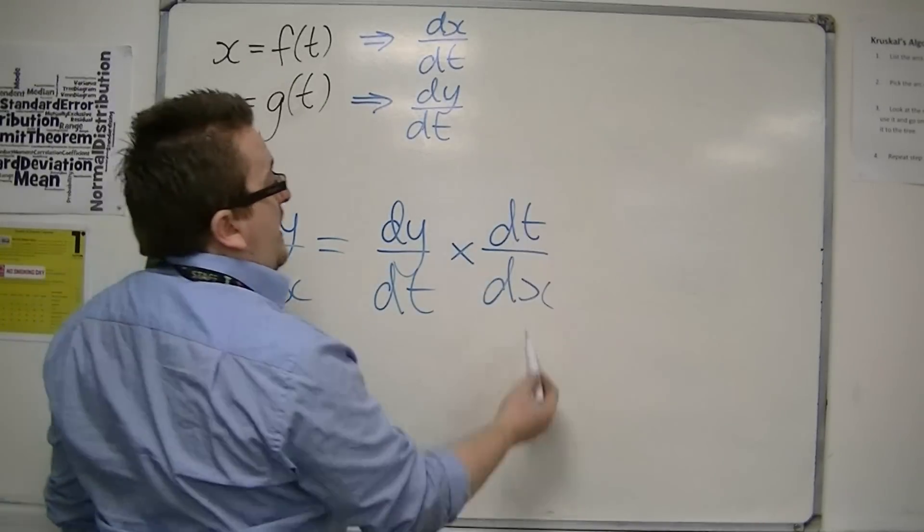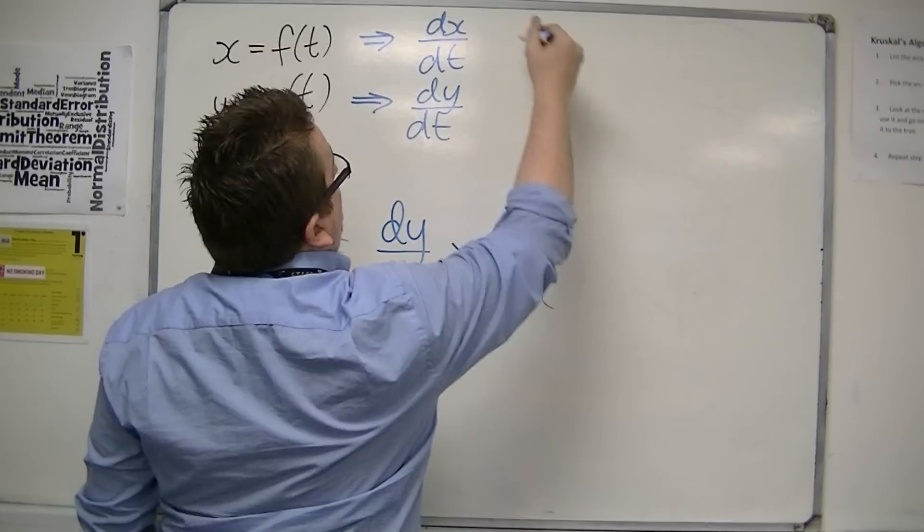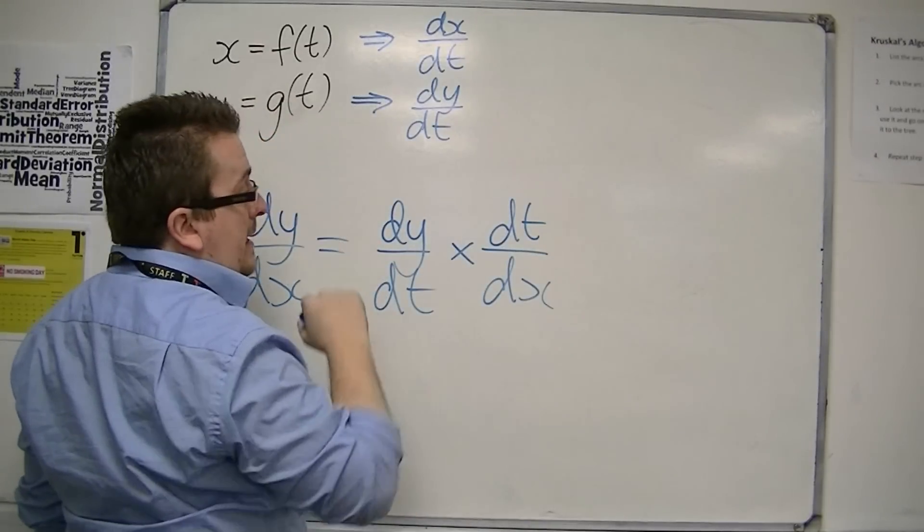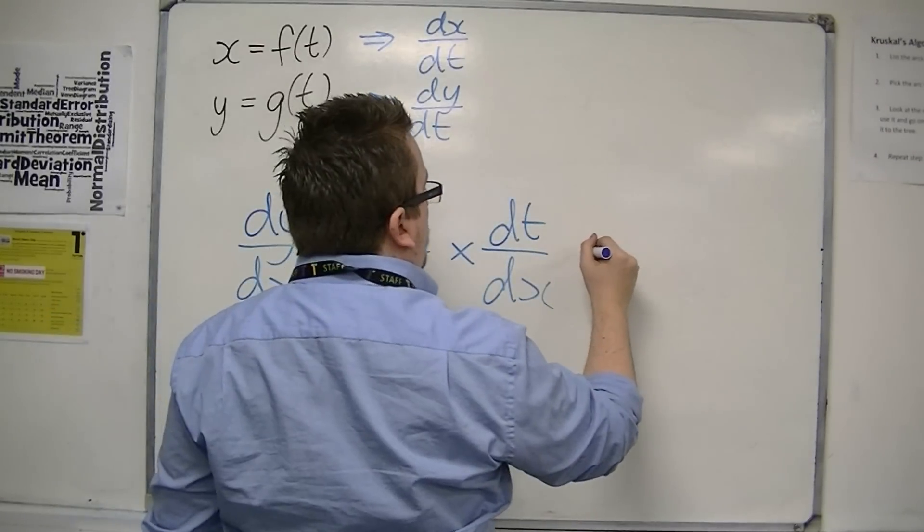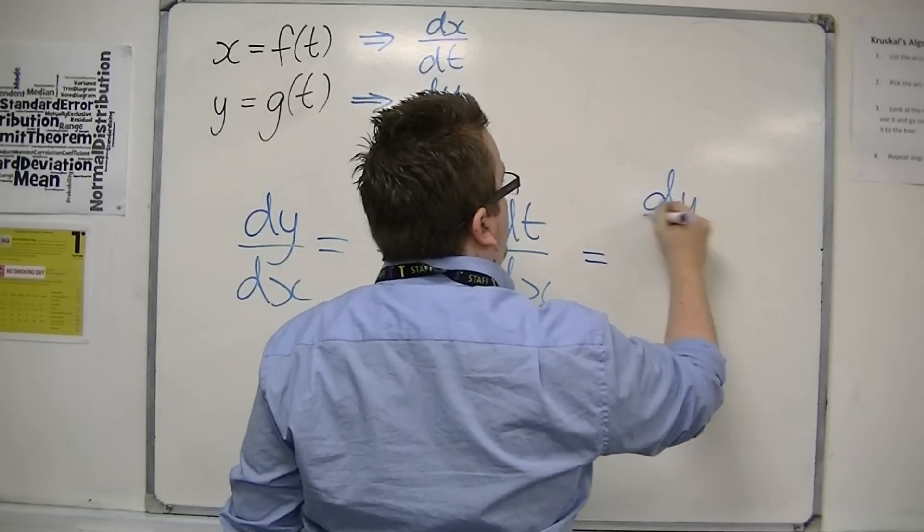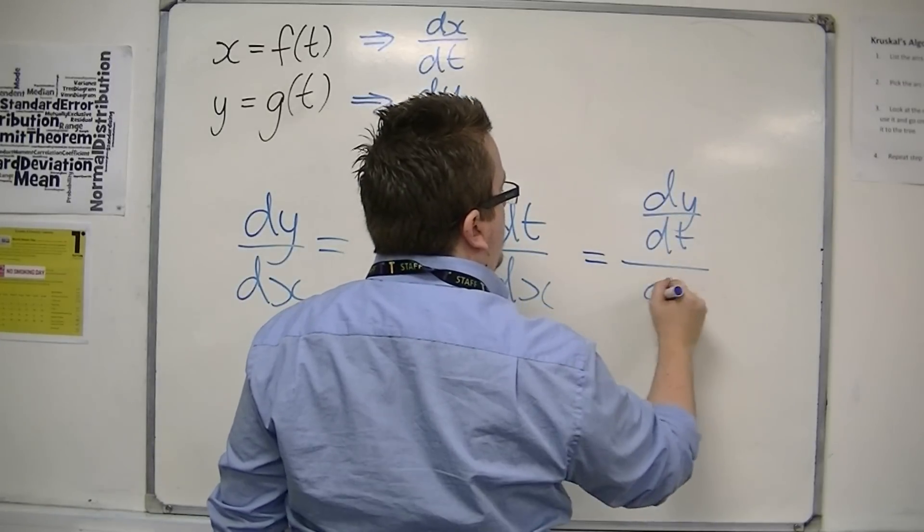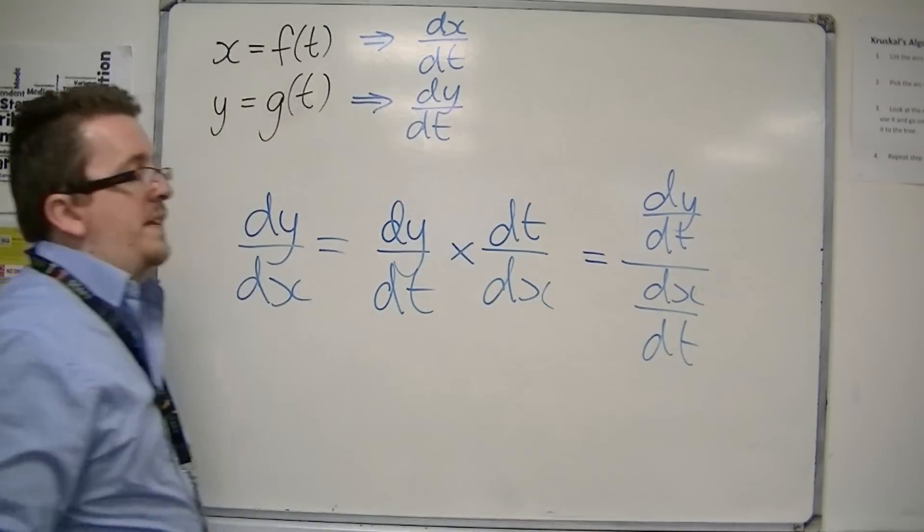Now, dt by dx is exactly the same as 1 over dx by dt, and so this is sometimes referred to as dy by dt over dx by dt. One divided by the other.